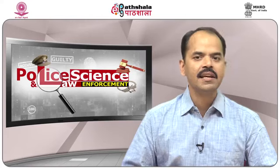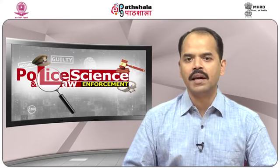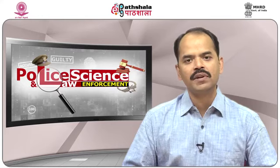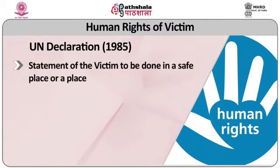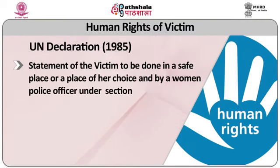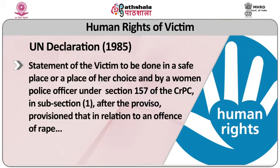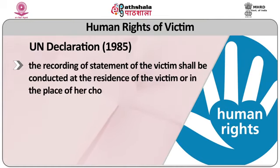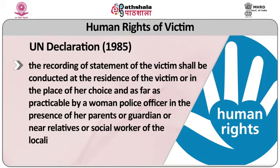Regarding the Indian legal position on victims: a victim can engage an advocate to support and help the prosecution under Section 24 of the CRPC, and its proviso says the court may permit the victim to engage an advocate of his choice to assist the prosecution. The statement of the victim is to be done in a safe place or a place of her choice, and by a woman police officer for women under Section 157 of the CRPC. The recording of statement of the victim in relation to an offence of rape shall be conducted at the residence of the victim or the place of her choice, and as far as practicable by a woman police officer in the presence of her parents, guardian, near relatives, or a social worker of the locality.